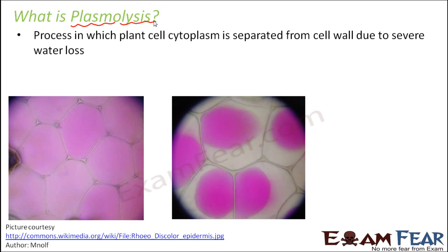Let us look at this picture which will give a better idea. This is how the plant cell looks before plasmolysis. The pink colored structure represents the vacuole — in plant cells, the vacuole occupies a major portion of the cell. The white region represents the cell walls, and inside that you have the cytoplasm and other organelles. After plasmolysis, the vacuole or pink region is quite well separated from the cell wall because the cell lost a major portion of its water.